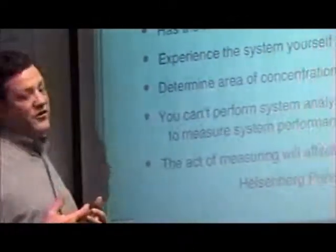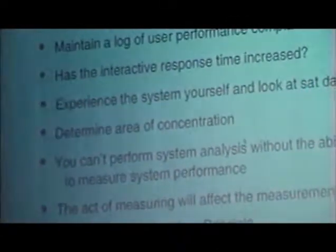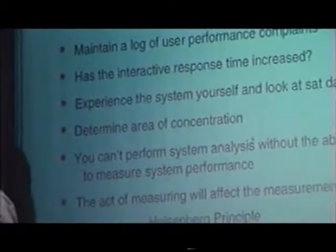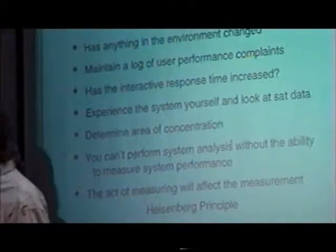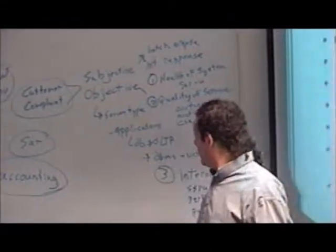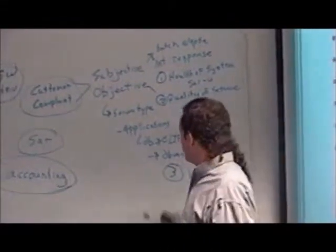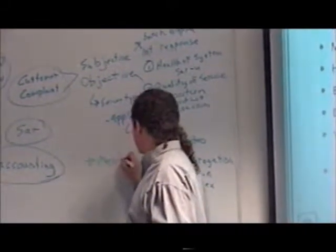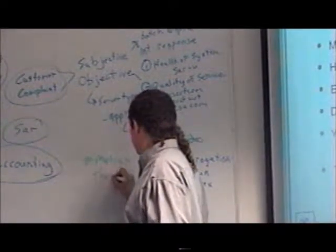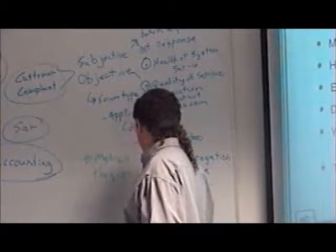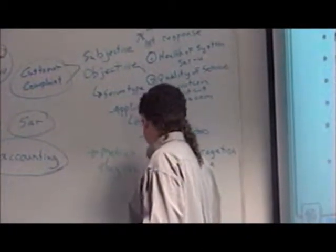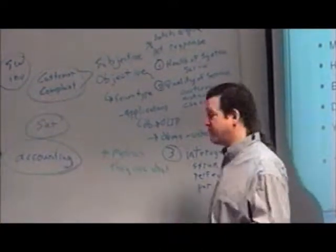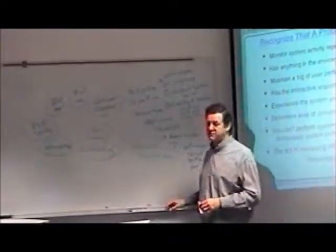Usually when I get called, there's a performance problem. I have to figure out subjectively what they're complaining about and then figure out what I want to measure. Besides server type, I'd want to know about the metrics they watch. If they say it's car crashes per day or web hits per hour, that metric is something I want to instrument and look at.